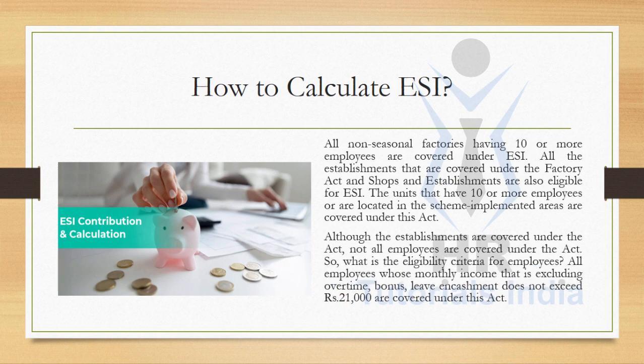It's not that every establishment whose employee strength is 10 or more is covered under ESI. There is an eligibility criteria which states that an employee's monthly income, excluding overtime, bonus, and leave encashment, does not exceed 21,000. Then that employee is covered under ESI Act.